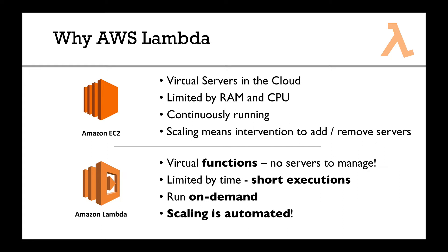You can have one Lambda function instance, but if tomorrow you get huge demand — a big client with massive traffic — the scaling is automated. You will get 1000 Lambda function instances running for you without doing anything. You pay for what you use, and they give you as much as you need. That's why it's called serverless: you don't need to manage your infrastructure anymore. AWS manages your infrastructure, and what you manage is your functions — what your application does. From a developer standpoint, that's awesome.